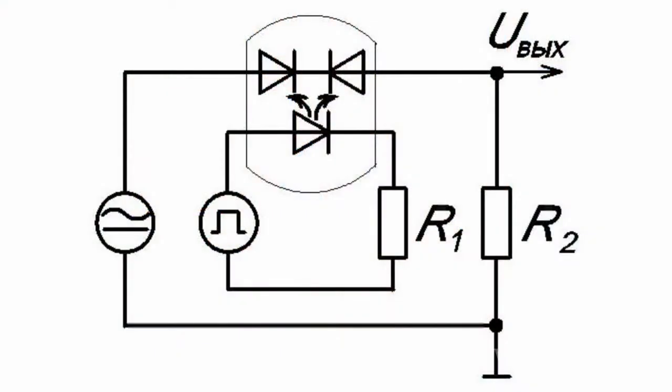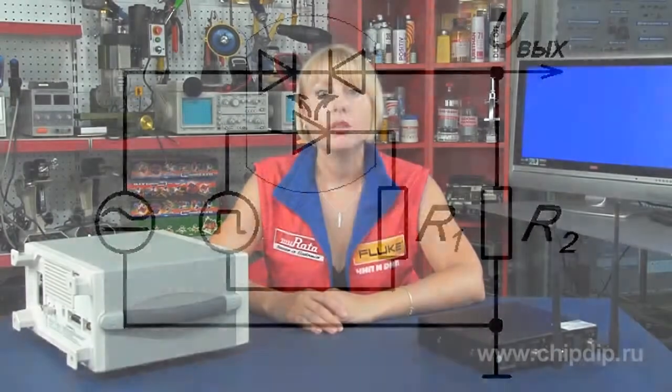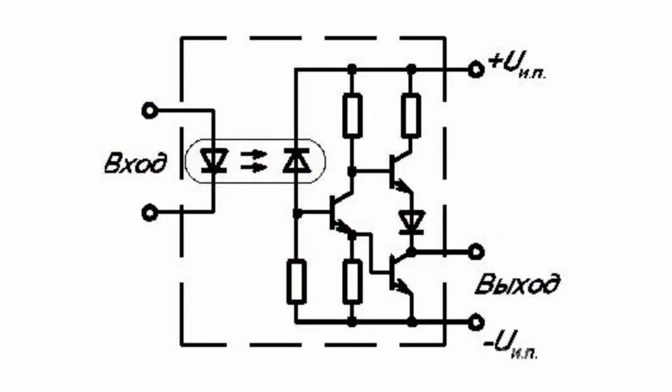A channel has optoelectronic couplers with gallium arsenide LED and two opposing PIN photodiodes on one monocrystal. There are other types of integrated circuits, such as key integrated circuits,